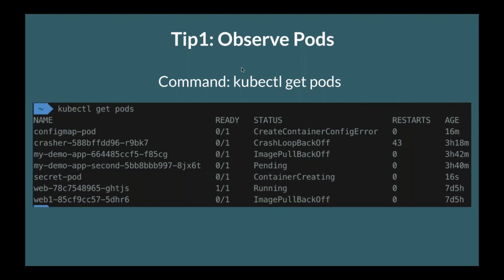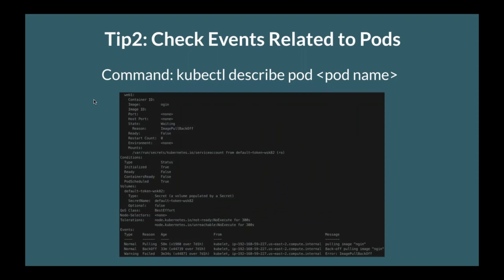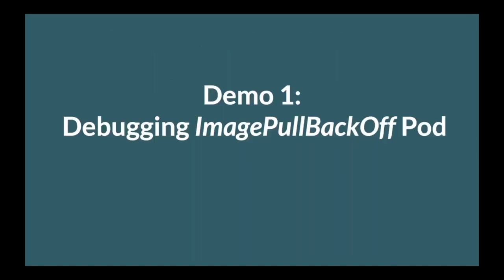Tip number two is to check the events related to your pods using kubectl describe pod with the pod name. This is extremely useful mostly in situations where the container itself did not start. If you recall, there are two main reasons pods fail: one is startup failure where containers don't even start — this is where describe pod is extremely helpful. The other is when the pod starts but the application inside the container crashes.